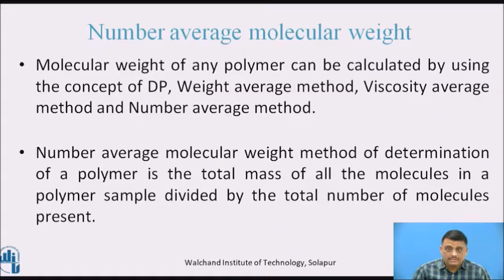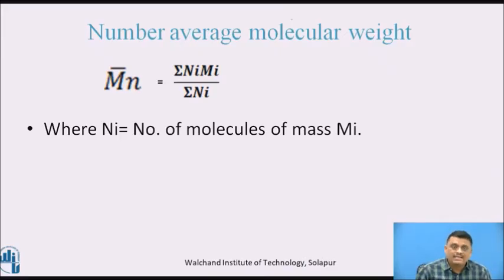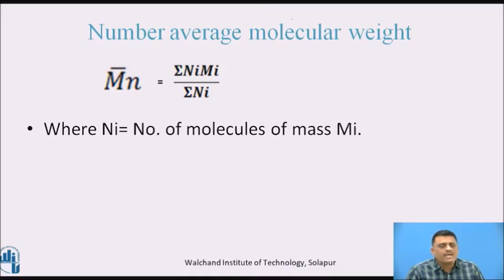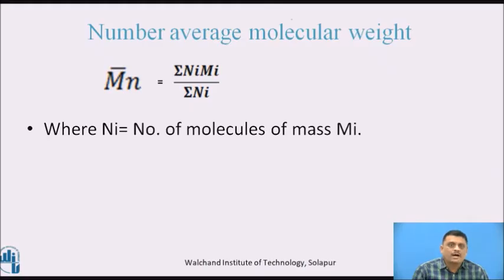The number average method of determination of polymer molecular weight is the total mass of all the molecules in a polymer sample divided by the total number of molecules present. Its formula is: M̄N = ΣNiMi / ΣNi, where M̄N is the number average molecular weight of the polymer, Ni is the number of molecules of corresponding mass Mi. So N1, N2, N3 are the counts of each type of molecule, and M1, M2, M3 are their respective molecular weights.